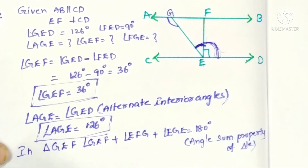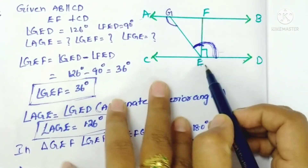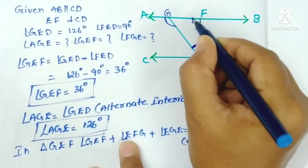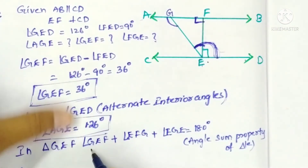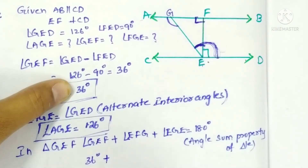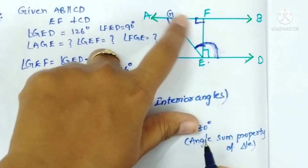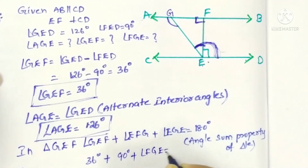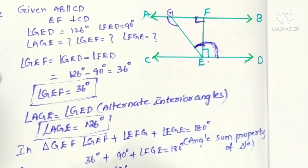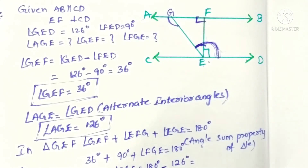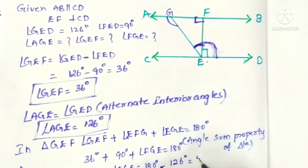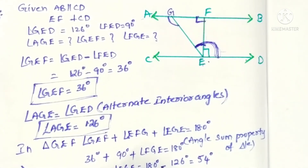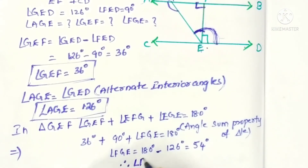Since the two lines are parallel and EF is perpendicular to CD, EF is also perpendicular to AB, so angle EFG equals 90 degrees. We have angle GEF equals 36 degrees and angle EFG equals 90 degrees. So 36 plus 90 plus angle FGE equals 180; that gives 126 plus angle FGE equals 180, so angle FGE equals 180 minus 126 equals 54 degrees. Therefore angle FGE is 54 degrees.